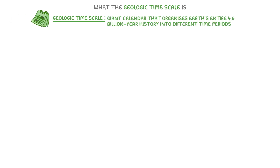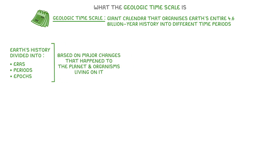Let's start with what the geologic timescale is. The geologic timescale is basically like a giant calendar that organizes Earth's entire 4.6 billion year history into different time periods. Just like how we divide a year into months, weeks and days, geologists divide Earth's history into eras, periods and epochs. However, this isn't a regular calendar with specific dates. Instead, it's based on major changes that happen to the planet and the organisms living on it over time.